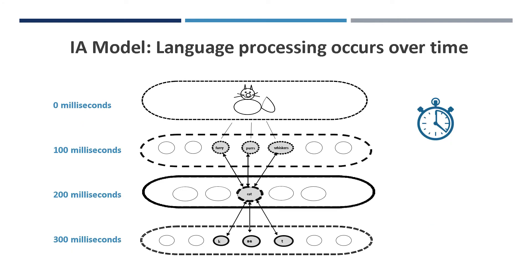An important concept is that word processing takes place over time. The time involved in activating the different language levels is very brief, a matter of milliseconds, but it is not instantaneous. The times shown here are just an example of how long it might take to retrieve a word. Different words in different contexts may take a longer or shorter amount of time.